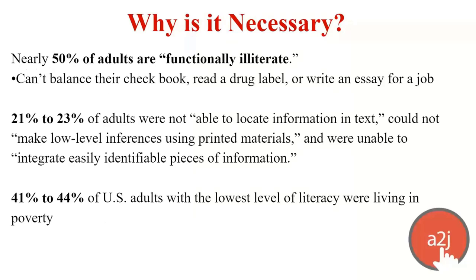In 2002, a study was released by the National Center for Education Statistics. It was a $14 million five-year study where they interviewed over 90,000 adults in the United States — the most comprehensive study of literacy ever commissioned by the U.S. government. It found that nearly 50% of adults are functionally illiterate, meaning they can't balance their checkbooks, read a drug label, or write an essay for a job. 21 to 23% of adults could not locate information in text, make low-level inferences using printed materials, or integrate easily identifiable pieces of information. 41 to 44% of U.S. adults with the lowest level of literacy were living in poverty. A smaller follow-up study in 2006 showed no statistically significant improvement in U.S. adult literacy.